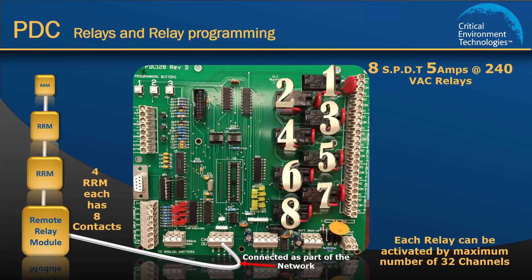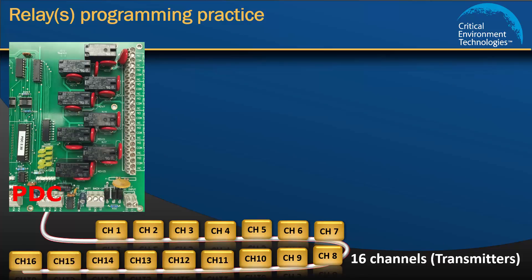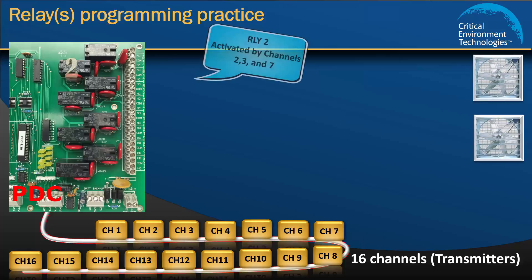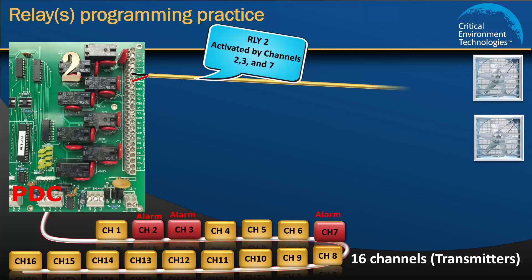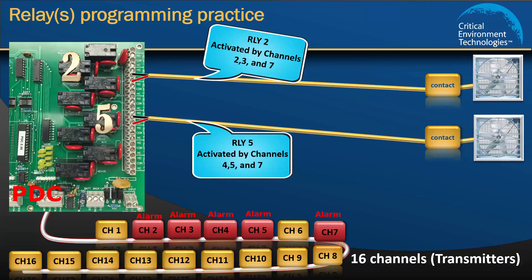A PDC uses a unique identifier, which we call a channel, that is assigned to each transmitter in the network so the PDC controller knows which unit it is communicating with. In this exercise there are 16 channels, or transmitters, and 2 fans. We are going to assign Relay 2 to be activated by channels 2, 3, and 7, and Relay 5 to be activated by channels 4, 5, and 7 for alarm conditions that send a signal to contacts that turn on ventilation fans.